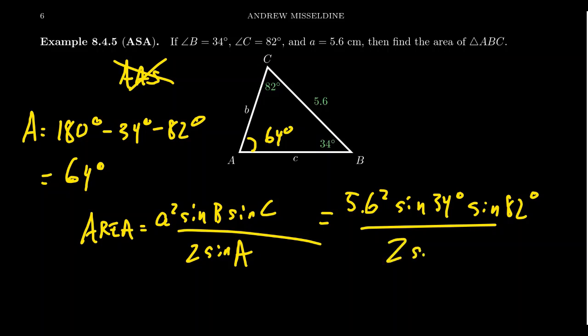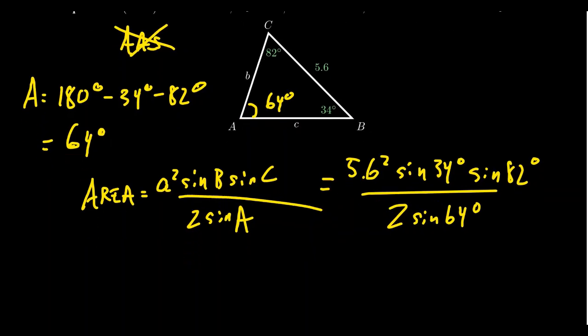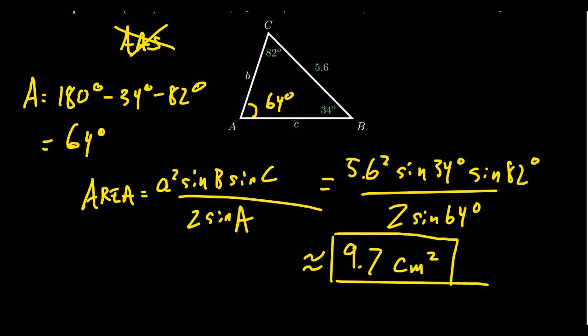Plugging in: 5.6 squared times sine 34 degrees times sine 82 degrees, all over two times sine 64 degrees. Since 34, 82, and 64 degrees are not special angles, we use a calculator in degree mode. The result is approximately 9.7 centimeters squared. So if you know two angles and a single side, use this AAS or ASA area formula to find the area of the triangle.